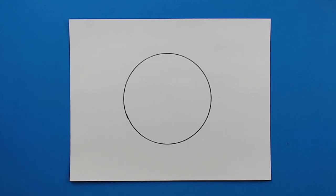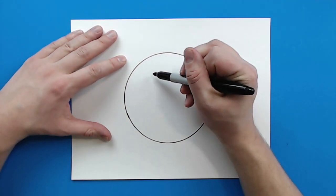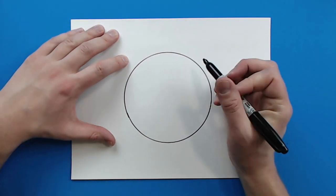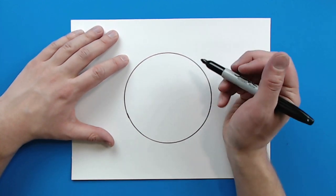Now, a yin and yang symbol is very easy, but a lot of people do mess up on it because both curves are supposed to be even. Now, this is always easier with a pencil because you can sketch it out. I'm just going to do this right here in a sharpie.